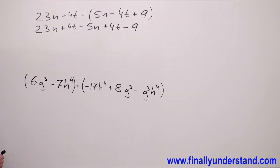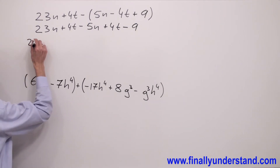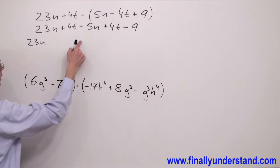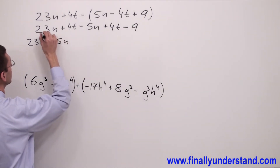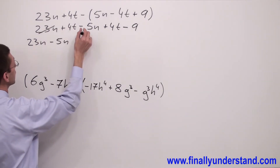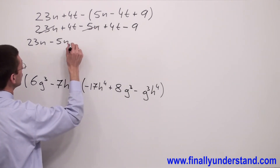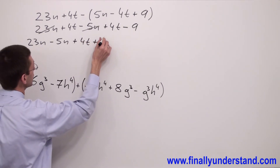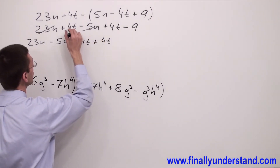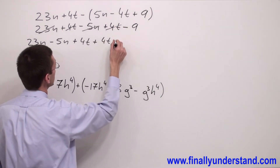Next, I will organize my like terms. I have 23n and I have minus 5n. Then I have 4t and 4t, so I have 4t plus 4t. And I have negative 9.